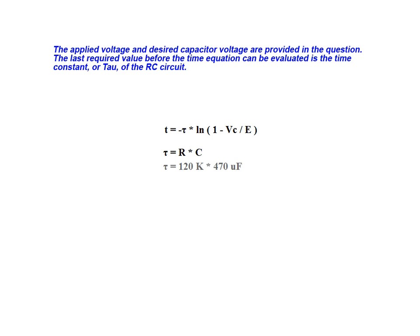As previously stated, the tau of an RC circuit is equal to the product of resistance and capacitance. The tau, or time constant, of this RC circuit is equal to 56.4 seconds.